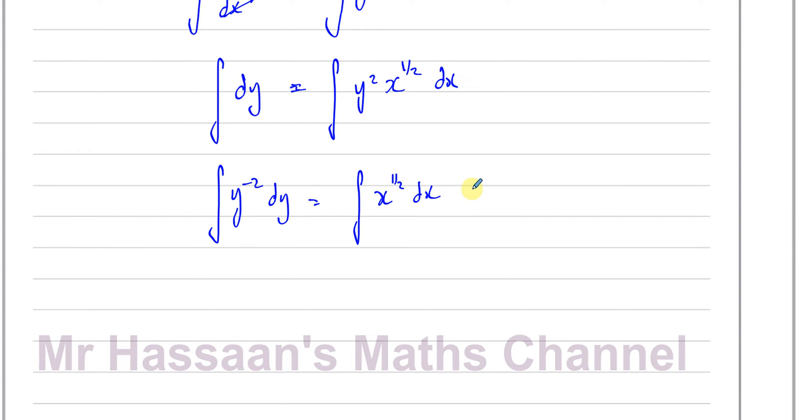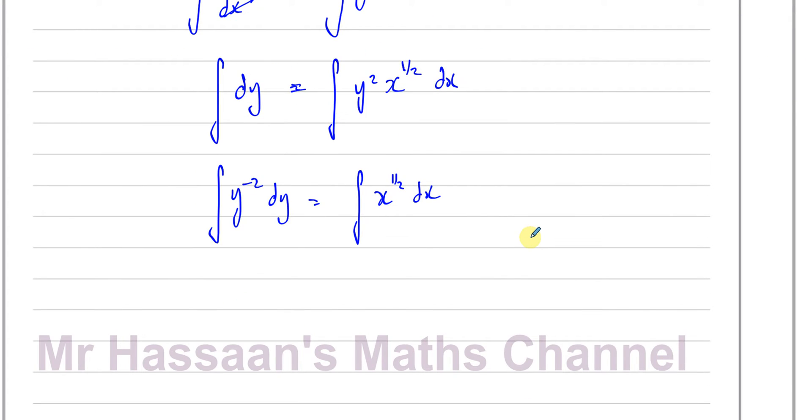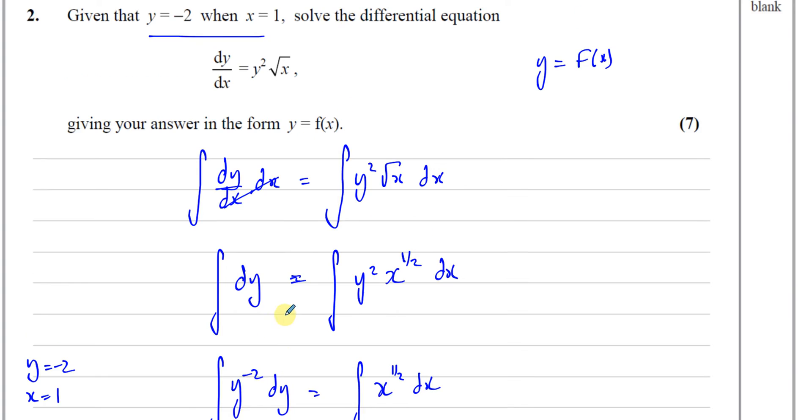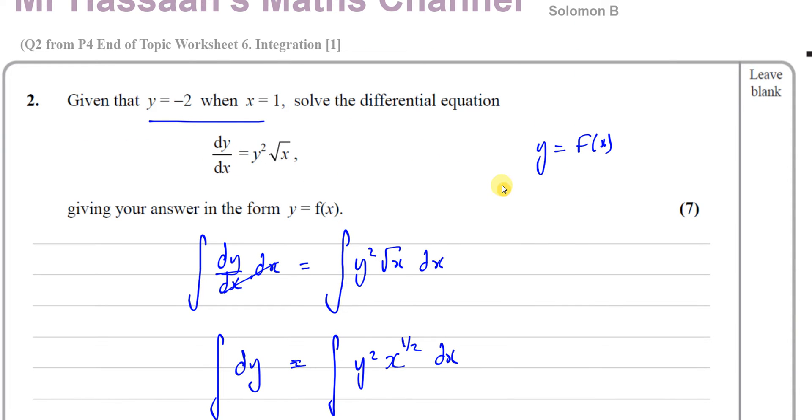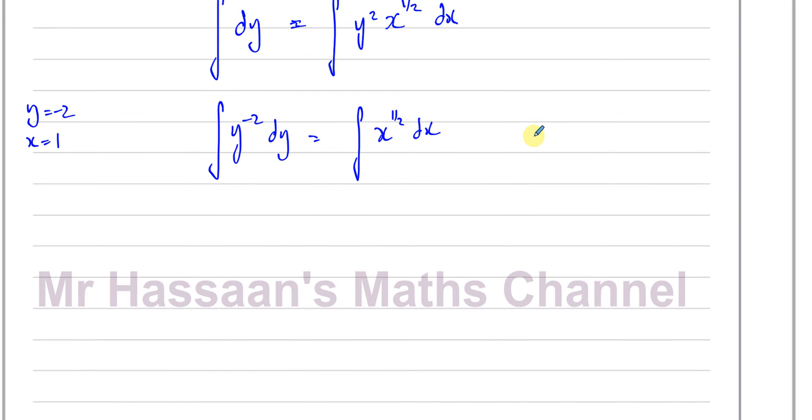Now what I'm going to do is something in addition that some people don't do. I'm going to take these values and use them. It says when y equals negative 2, x equals 1. So we have a pair of values that will help us solve this differential equation in such a way that we will have the value of the constant of integration. I'm going to do it in such a way that I don't have to write plus c at the end. There's a nice, easy way to do it. The way is to write down the limits y and x.